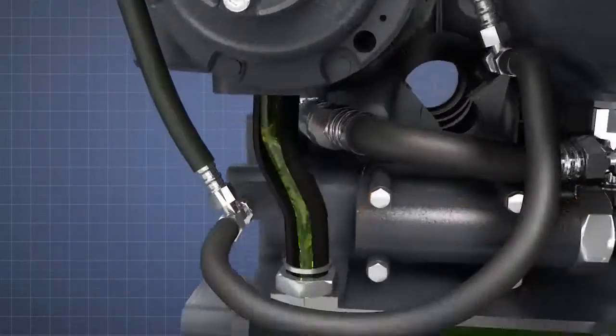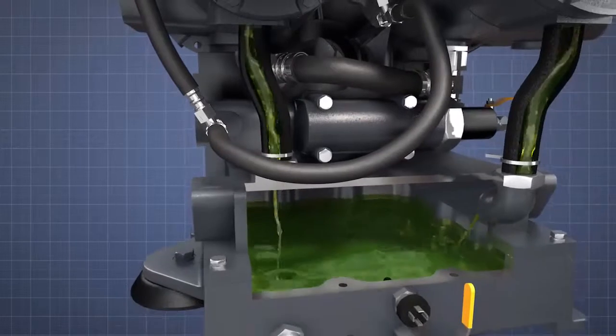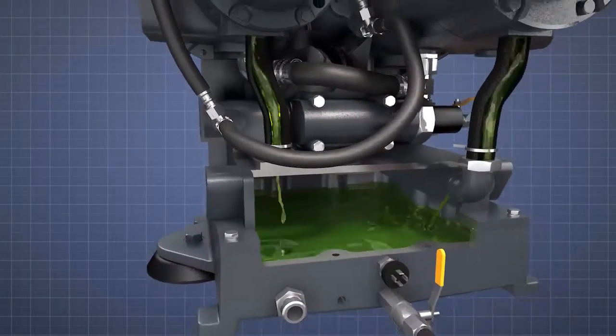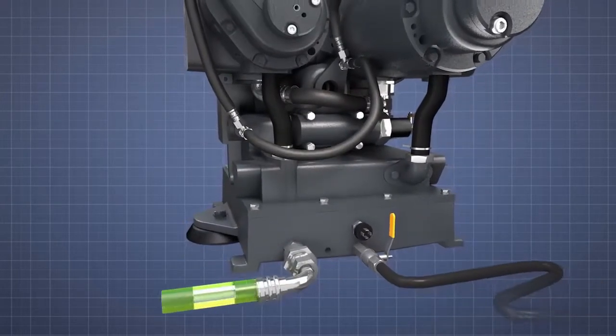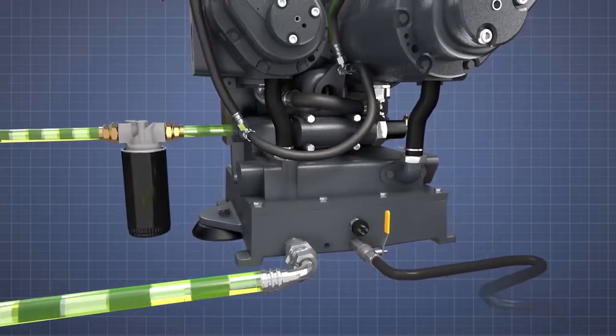Hot oil drains to an oil reservoir located below the air-end via two oil return pipes. The hot oil is then pumped to a cooler and returns to the air-end via an oil filter.